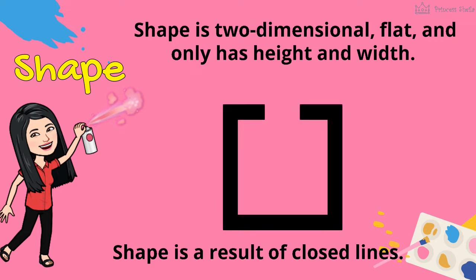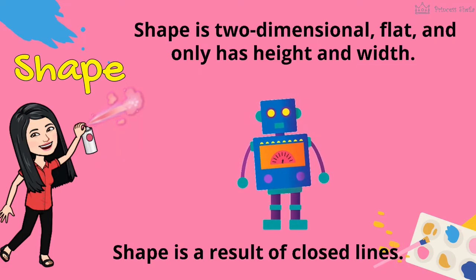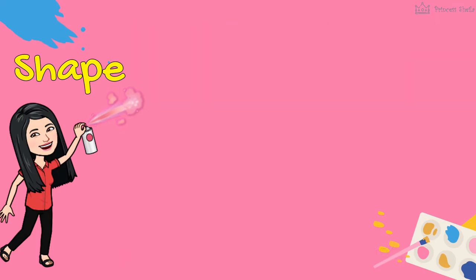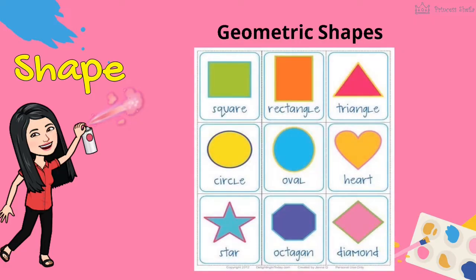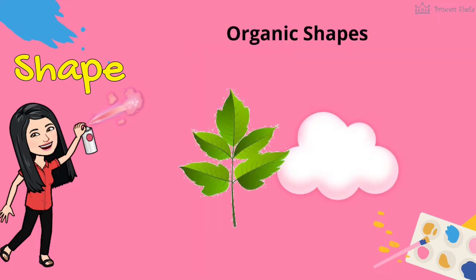Look at the picture. Is it a shape? No. It only looks like a square, but it isn't because the lines aren't closed. You can easily draw anything by putting together shapes, like this robot. The two different categories of shapes are geometric and organic. Geometric shapes are mathematical, like circles and squares. Organic shapes come from nature, like clouds and leaves.